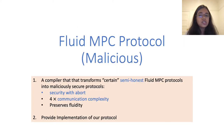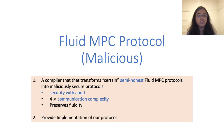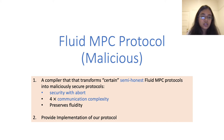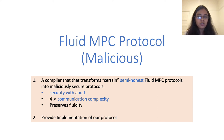For our maliciously secure protocol, we present a compiler that transforms certain semi-honest protocols — including the Fluid BGW protocol just described — into a maliciously secure protocol. The resulting maliciously secure protocol achieves security with abort and has the same level of fluidity as the underlying semi-honest protocol. We also provide an implementation of our maliciously secure protocol based on semi-honest Fluid BGW.